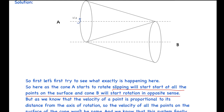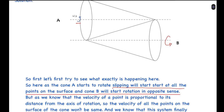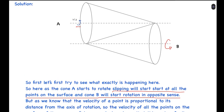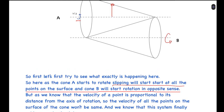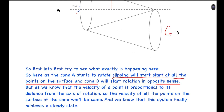As this cone is rotating in one sense, cone B will start rotating in the opposite sense. As we know, the velocity of a point is proportional to its distance from the axis of rotation. So the velocity of all the points on the surface of the cone won't be the same. The speed of any point equals omega about the axis times the distance from the axis.